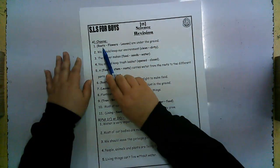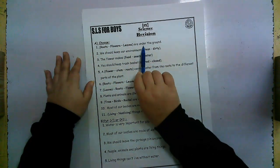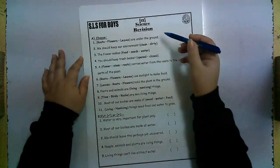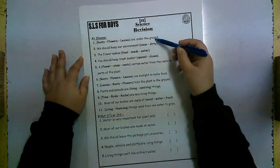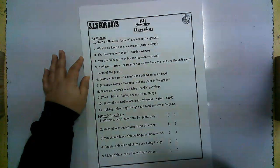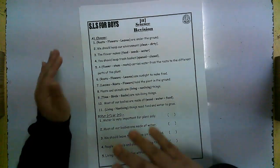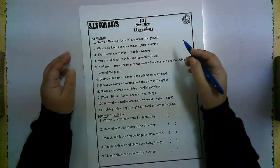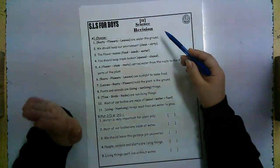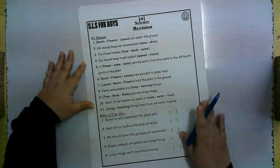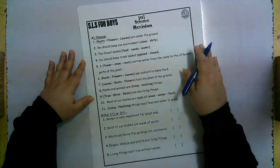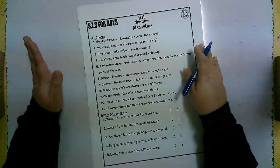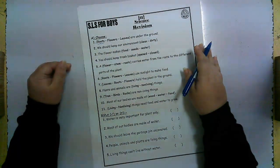Number One: roots, flowers, or leaves are under the ground. When you see the word 'ground,' you think about what is under the ground that keeps the plant steady. It's the roots — the bottom part of the plant. They hold the plant in the ground. The word 'ground' indicates roots.